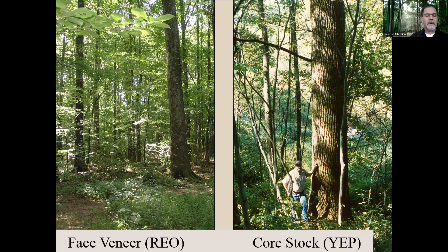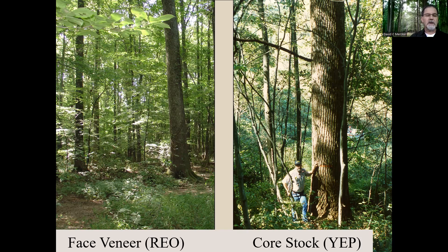For example, red oak cabinets could have side panels with a thin layer of fine oak face veneer overlaid on a thicker layer of common yellow poplar core stock. The focus of this video is on hardwood face veneer.